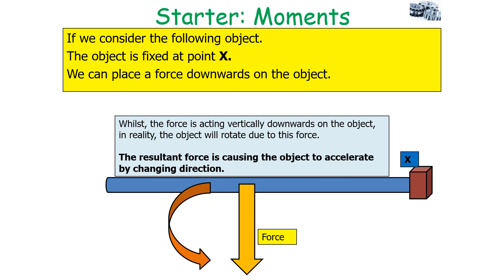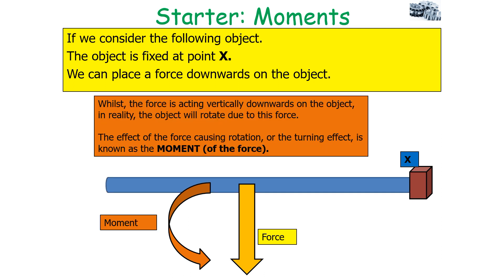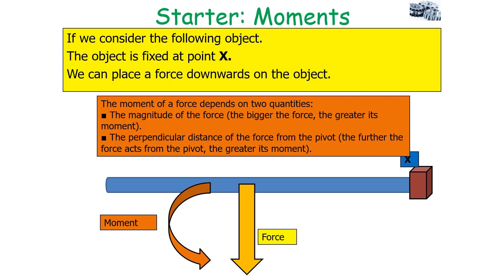So whilst the force is acting vertically downwards, in reality it causes the object to rotate. The resultant force causes the object to accelerate by changing its direction. The effect of a force causing rotation or a turning effect is known as the moment of the force. The moment depends on two quantities: the magnitude of the force — the bigger the force, the greater its moment — and the perpendicular distance of the force from the pivot — the further the force acts from the pivot, the greater its moment.